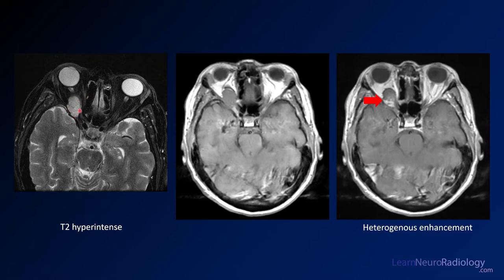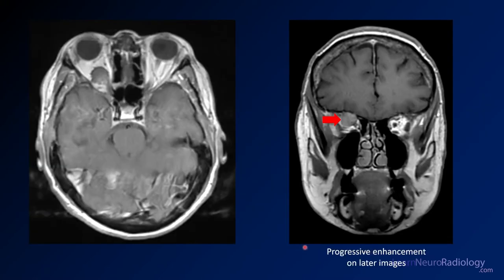On T2, it's pretty hyperintense — very close to the vitreous in the eye or the CSF. On your T1 pre-contrast, it's pretty isointense to gray matter. On your post-contrast, it starts to enhance a little bit with some enhancement around the periphery of the lesion, though not completely — it's a little heterogeneous. This is where you have your real clue to make the slam dunk of this diagnosis.